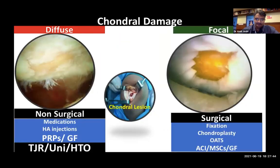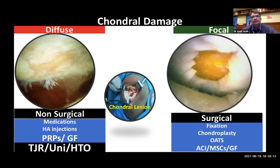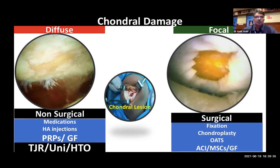For cartilage treatment, first we must identify whether the lesion is diffuse or focal. If diffuse, treatment is initially non-surgical: medications, HA injection, PRP, and various growth factors. At some point you're looking at total joint replacement, uni replacement, or even a high tibial osteotomy. The major focus of today's talk is the focal lesion, which requires surgical intervention — fixation, chondroplasty, OATs, cellular and mesenchymal approaches like ACI, various growth factors, and BMAC.